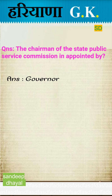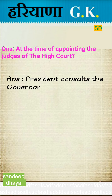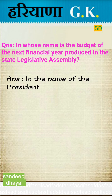The chairman of the State Public Service Commission is appointed by the Governor. At the time of appointing the judges of the High Court, the President consults the Governor of the state. In whose name is the budget of the next financial year produced in the state legislative assembly? Answer: In the name of the Governor.